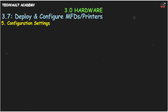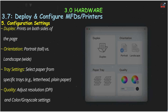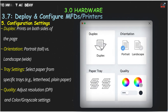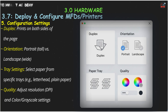Let's dive into configuration settings. Duplex printing allows you to print on both sides of a page, saving paper. Orientation lets you choose between portrait (tall) and landscape (wide). For printers with multiple trays, you can load different paper types and select which tray to use for each job. You can also adjust print quality by changing the resolution (DPI) or choosing between color and grayscale to save ink or toner.